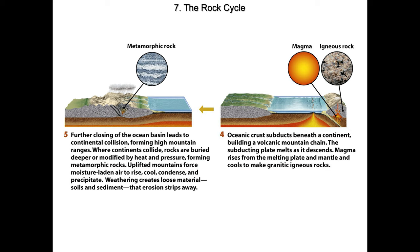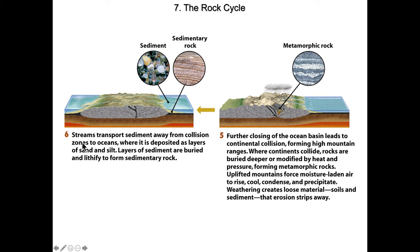This weathering is going to result in loose material — soils and sediment. Erosion is going to move that off the slope and into the Bengal fan, a huge deposit of sediment off the southern coast of India. Streams and rivers transport the sediment away from the collision zones to the oceans as sand and silt. Eventually layers are buried and lithify, forming sedimentary rock.